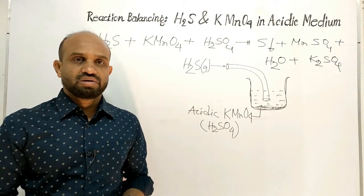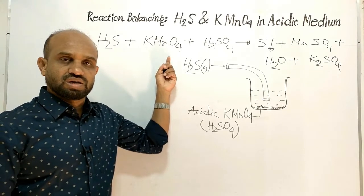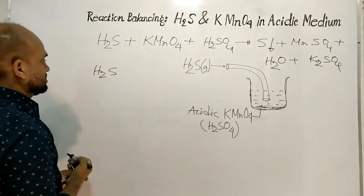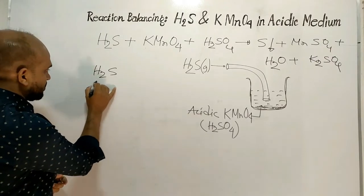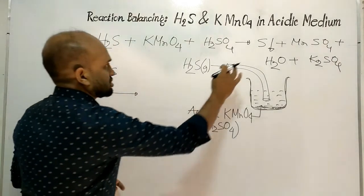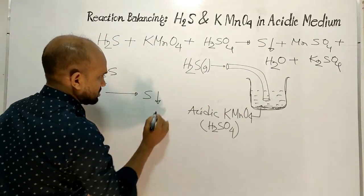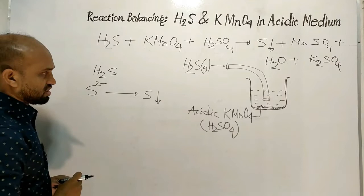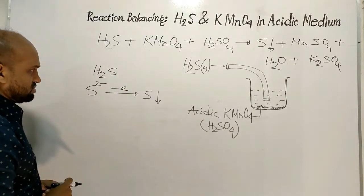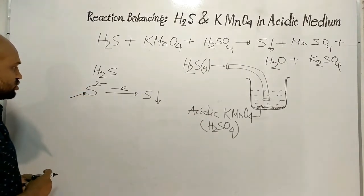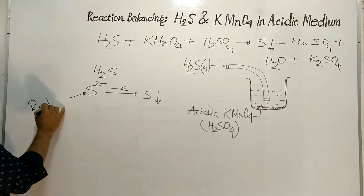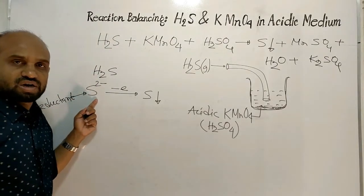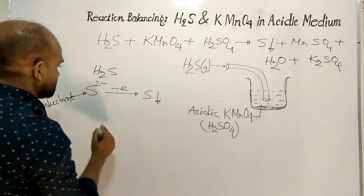Now let's find which is the oxidant and which is the reductant. In hydrogen sulfide, the sulfide ion is converted to sulfur, which deposits at the bottom of the beaker. That means the sulfide ion donates electrons, and an electron donor is a reductant. So hydrogen sulfide — that is, the sulfide ion — is the reductant.